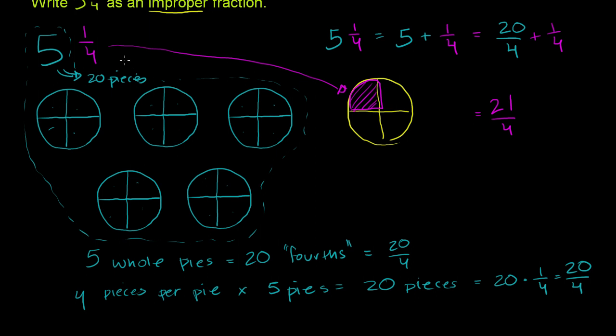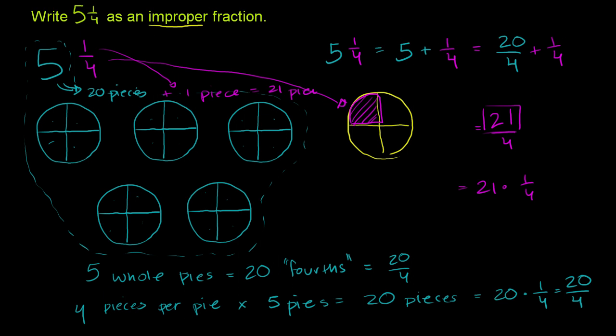This 1/4 right here represents 1 piece plus 1 piece. So total we're going to have 21 pieces. So we have 21 pieces where each piece is 1/4. So you could say we have 21 times 1/4 or 21/4 pieces of pie. However you want to think of it, but we've solved the problem. We're at an improper fraction. We've written 5 and 1/4 as an improper fraction.